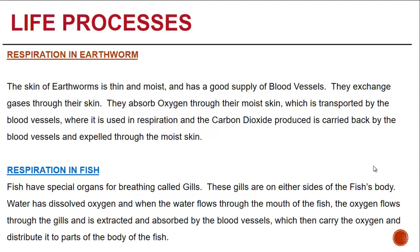In earthworms, the skin is thin and moist and they have a good supply of blood vessels. Gaseous exchange takes place through the skin — they absorb oxygen through the moist skin, which is transported by the blood vessels where it is used in respiration. The carbon dioxide produced is carried back by the blood vessels and expelled through the moist skin.